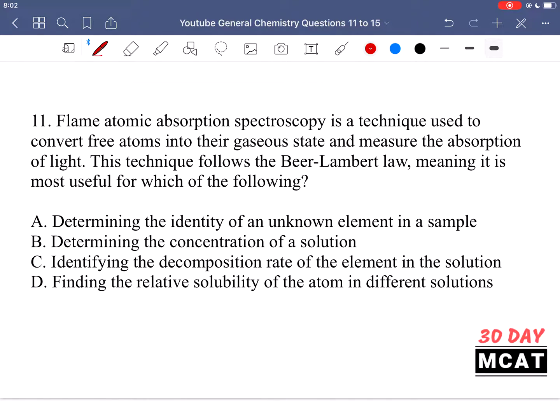Now let's go through the questions together. In question 11 it says flame atomic absorption spectroscopy is a technique used to convert free atoms into their gaseous state and measure the absorption of light. This technique follows the Beer-Lambert law meaning it is most useful for which of the following. So we are using something which is dependent on the Beer-Lambert law and we want to know what it's useful for. So the Beer-Lambert law looks like this.